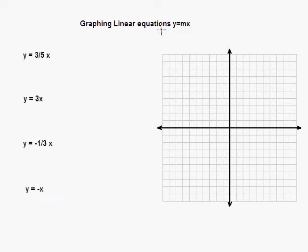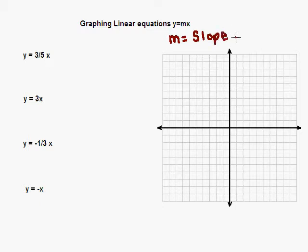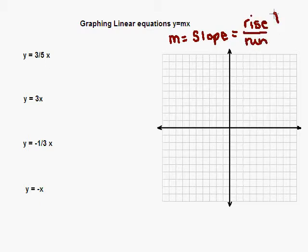Today we're going to be graphing linear equations in the form y equals mx. This week we've looked a lot at this equation, y equals mx. Remember, the m variable represents the slope of the line. We discussed that the slope is the difference in the y's over the difference in the x — or it's the rise over the run, the vertical change over the horizontal change. We're going to use the fact that m is the rise over the run to take these equations and graph them and find the line each equation represents.